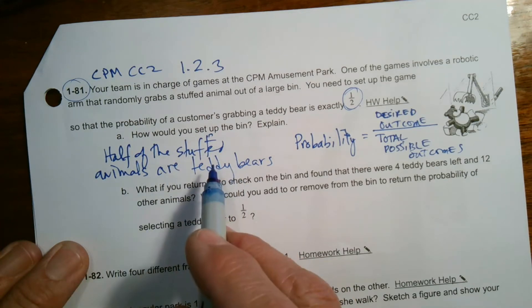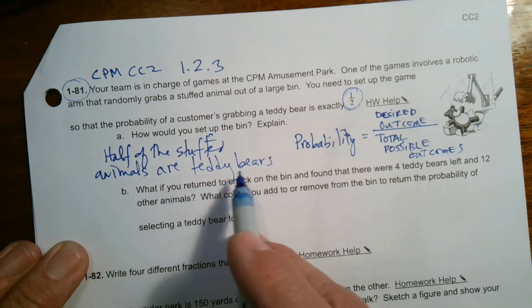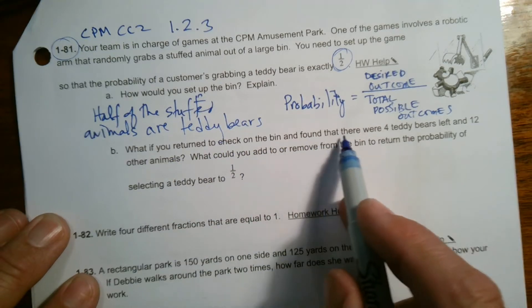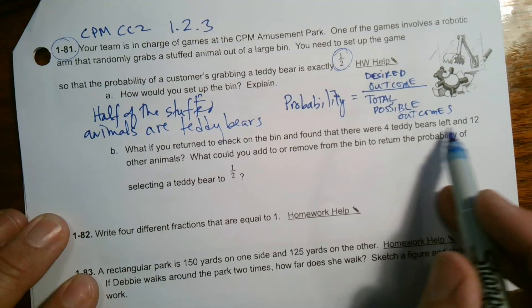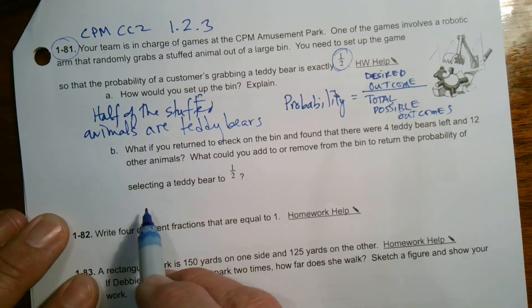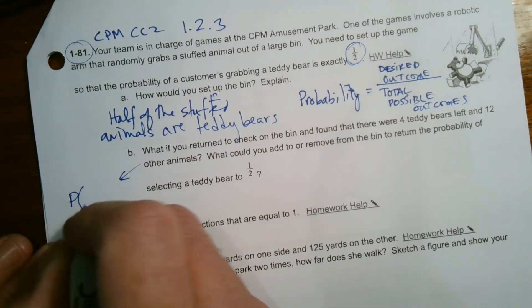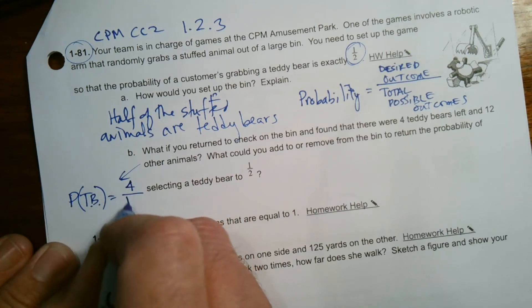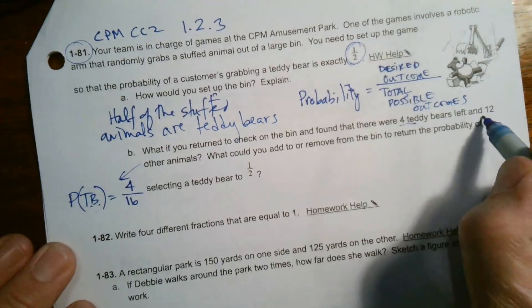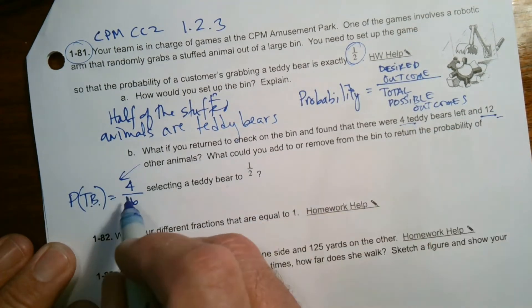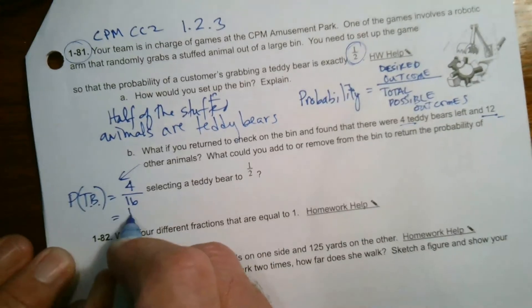So they have to be equal. But in concept here, half of the animals have to be teddy bears. So let's move on to B. What if you return to check on the bin and found that there were four teddy bears left and 12 other animals? So right now the probability of getting a teddy bear is four out of 16. Well, four over 16 is equal to one-fourth.